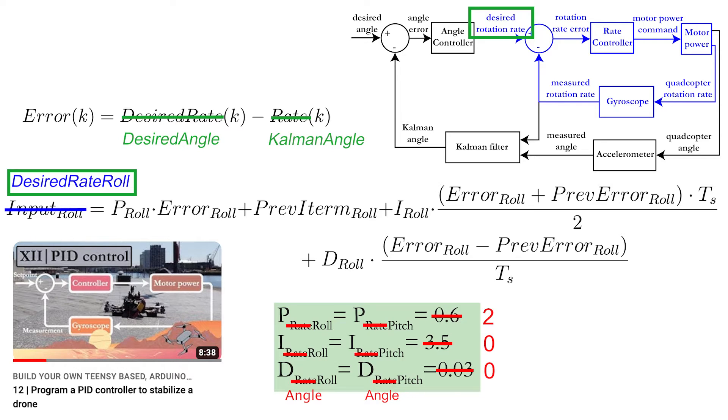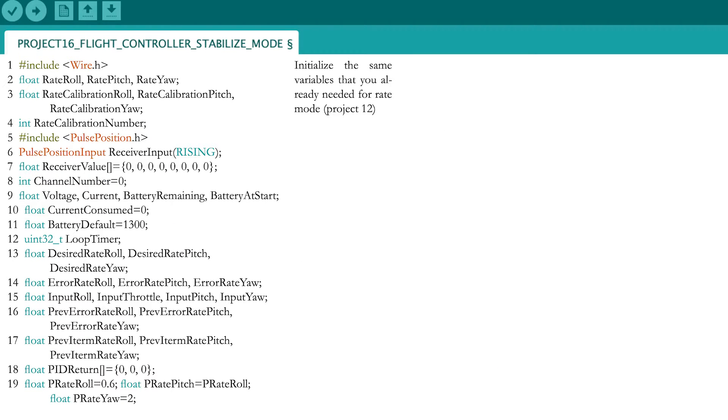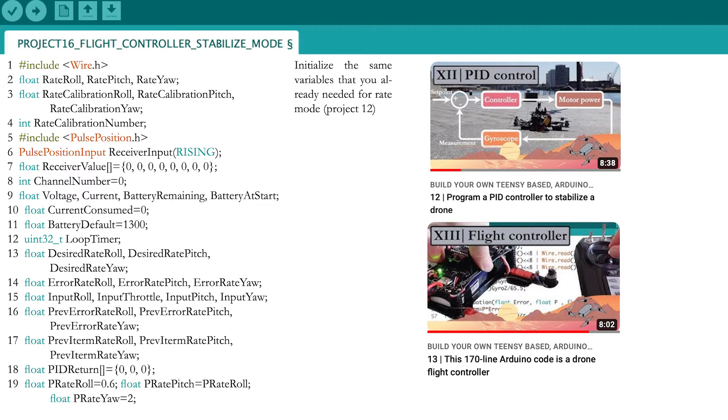Let's proceed with the full code in Arduino. We will initialize the same variables we already saw in parts 12 and 13.